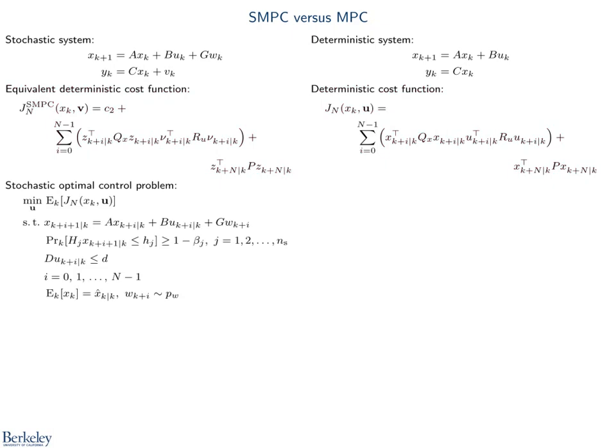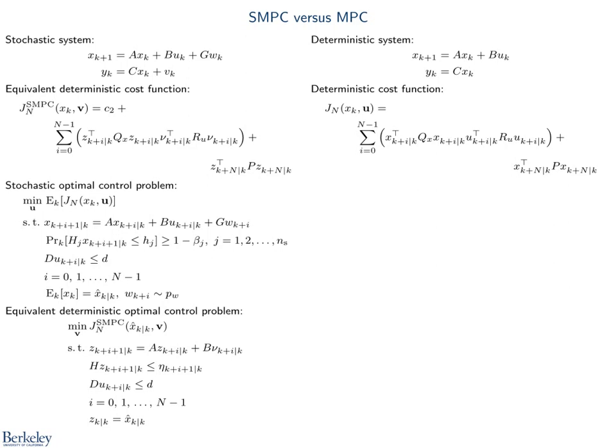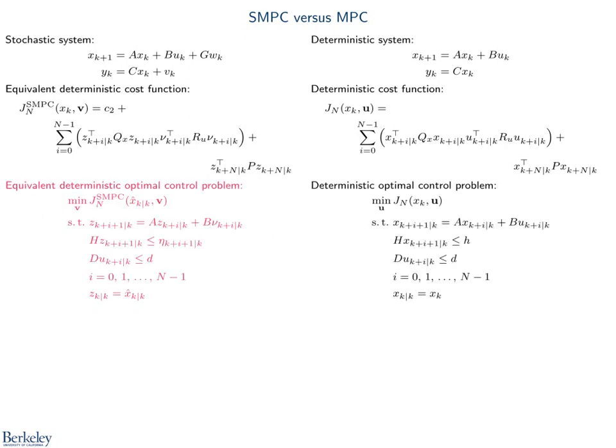Similarly, with the optimal control problems, the stochastic formulation has this equivalent deterministic form, highlighted here. This is a QP, and again, identical in complexity to the QP in standard MPC, also shown in red. The only significant difference is the right-hand sides in the state constraints, highlighted in red.